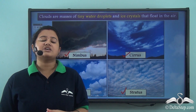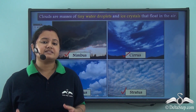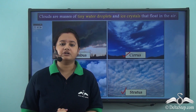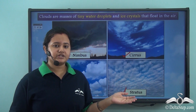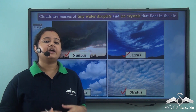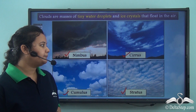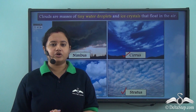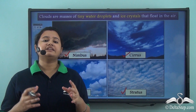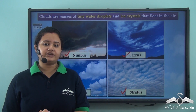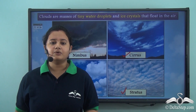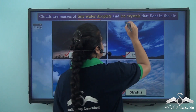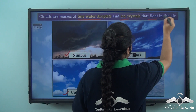All these clouds are not formed at the same height. For instance, Nimbus lie very close to the earth's surface, whereas Cumulus and Stratus are formed throughout the entire range of the troposphere, while Cirrus are mostly formed at higher altitudes. Clouds, as we know, are masses of tiny water droplets and ice crystals that float in air.